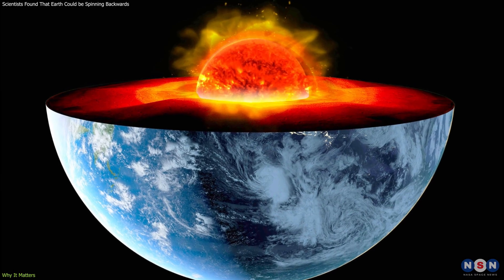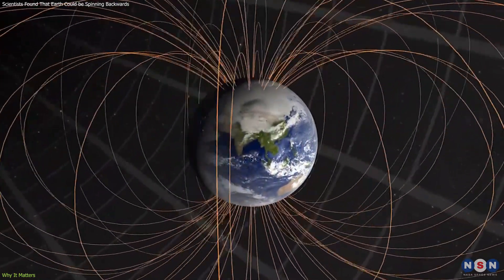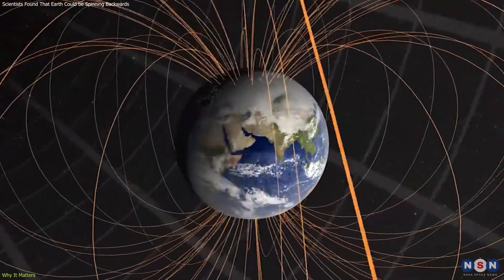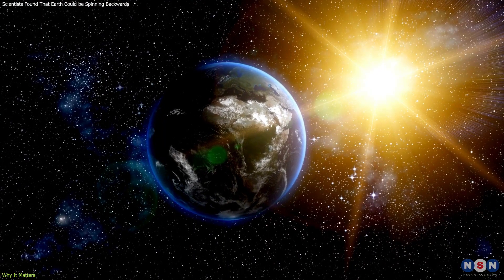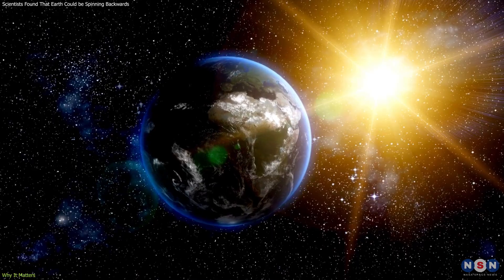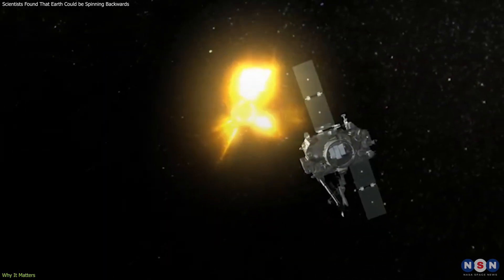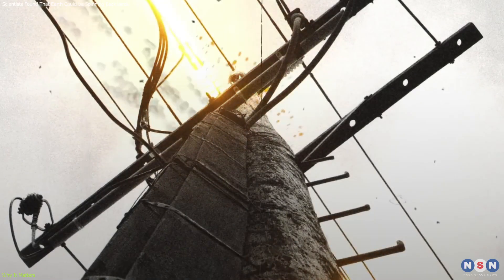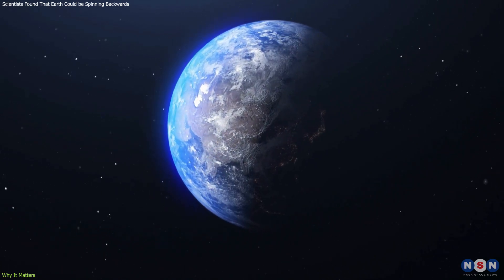If the core's dynamics change, it could alter the magnetic field's intensity and stability, which leads to increased solar radiation reaching the Earth's surface, affecting everything from satellite operations to power grids. The core's rotation also influences the length of a day.